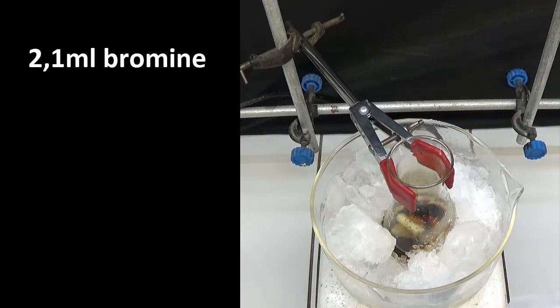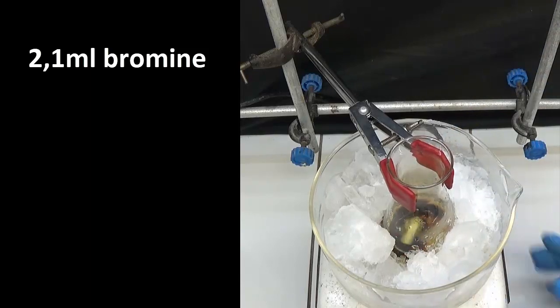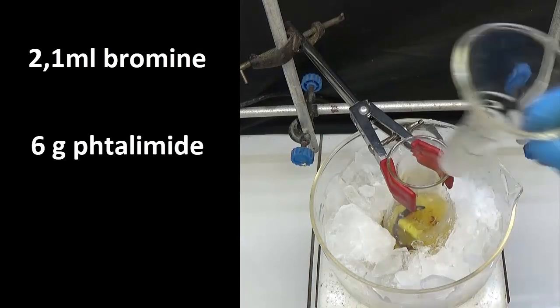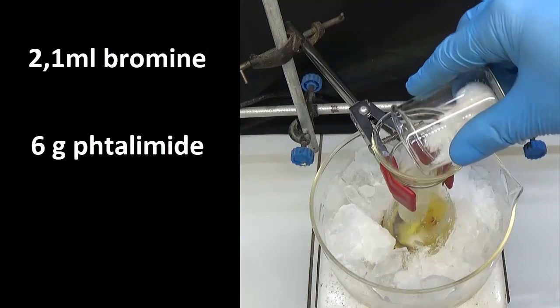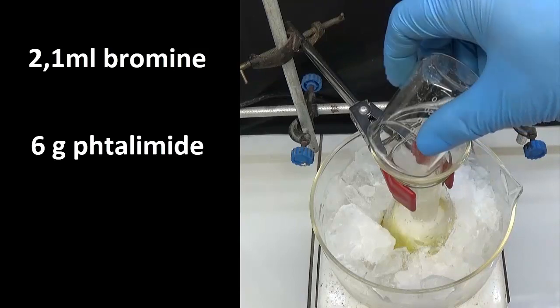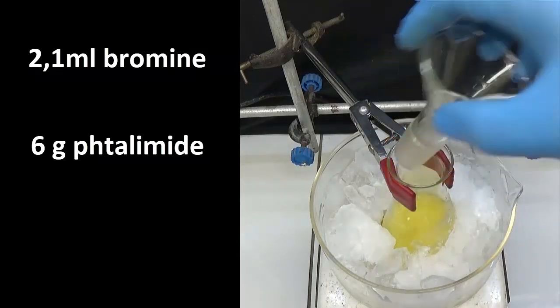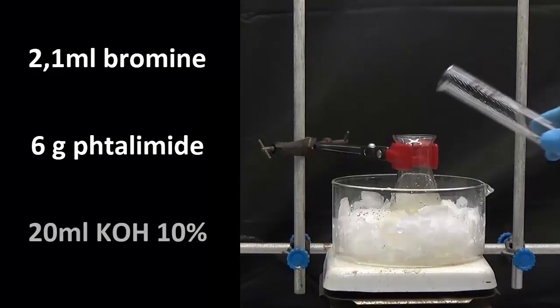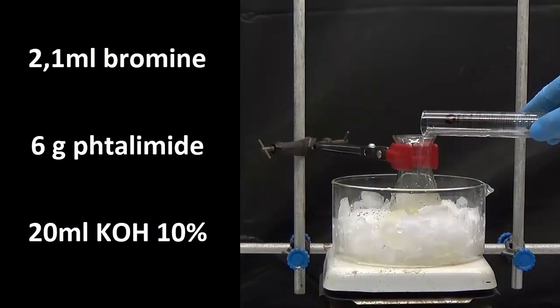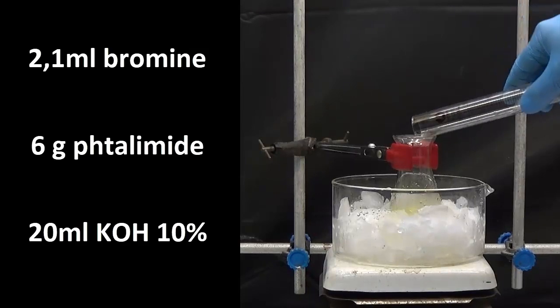Allow to stir a few minutes and add 6 grams of thalamide. Then add 20 milliliters potassium hydroxide solution at 10 percent.